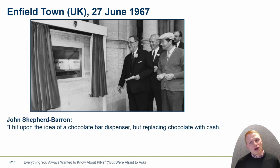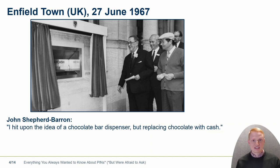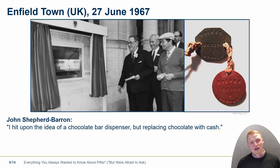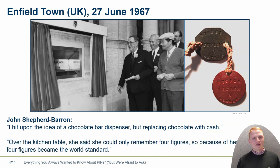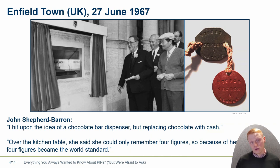The first ATM was invented by John Shepard-Barron. He had the idea: well, I can basically get a chocolate bar everywhere — why can't I get money everywhere? So he came up with this idea of a cash dispenser, or what was later called an ATM. He also thought about security back in those days. He said, I can still remember this number, which is printed on the dog tag I got from the army — so six digits seems reasonable, but I can still remember it. However, he also asked his wife, and she said over the kitchen table that she could only remember four figures. So because of her, four figures became the world standard that we're also using today.